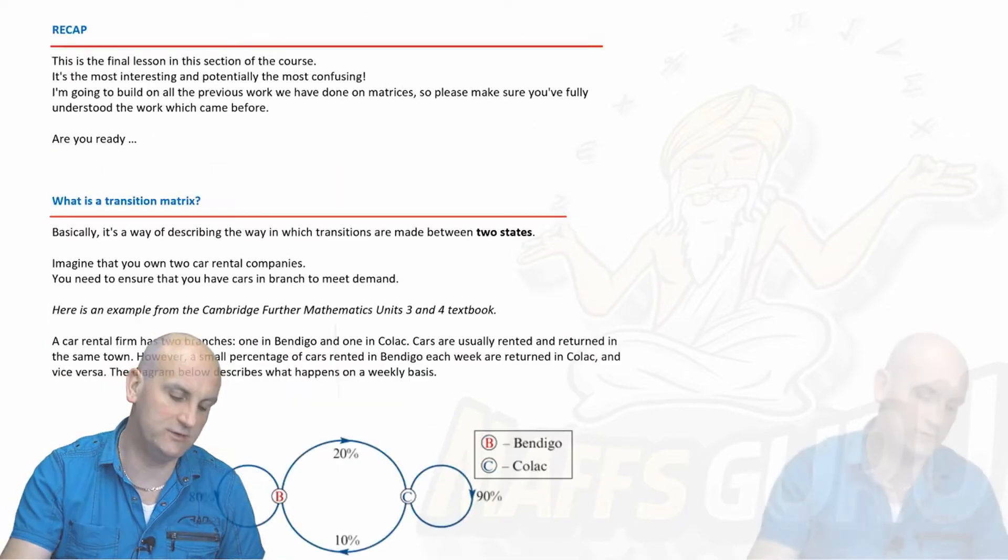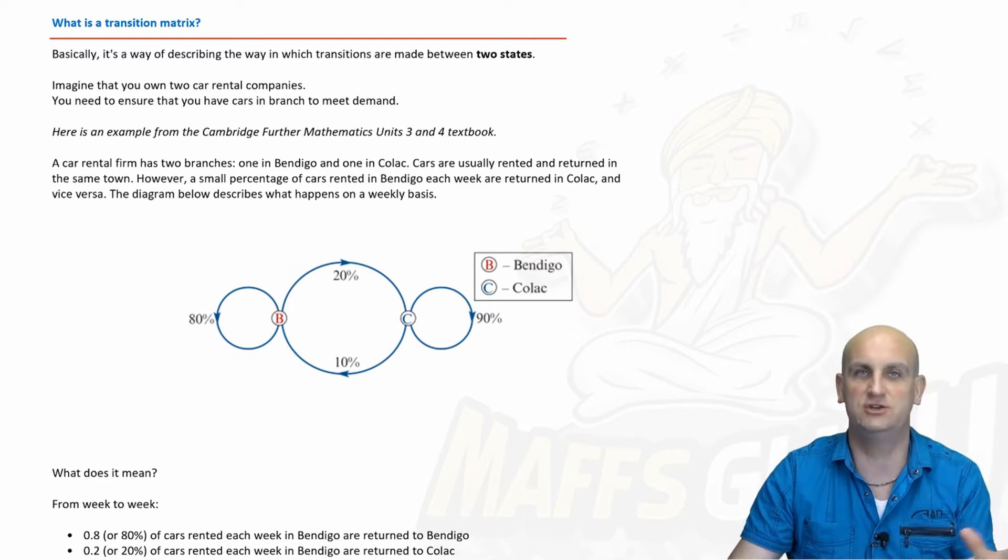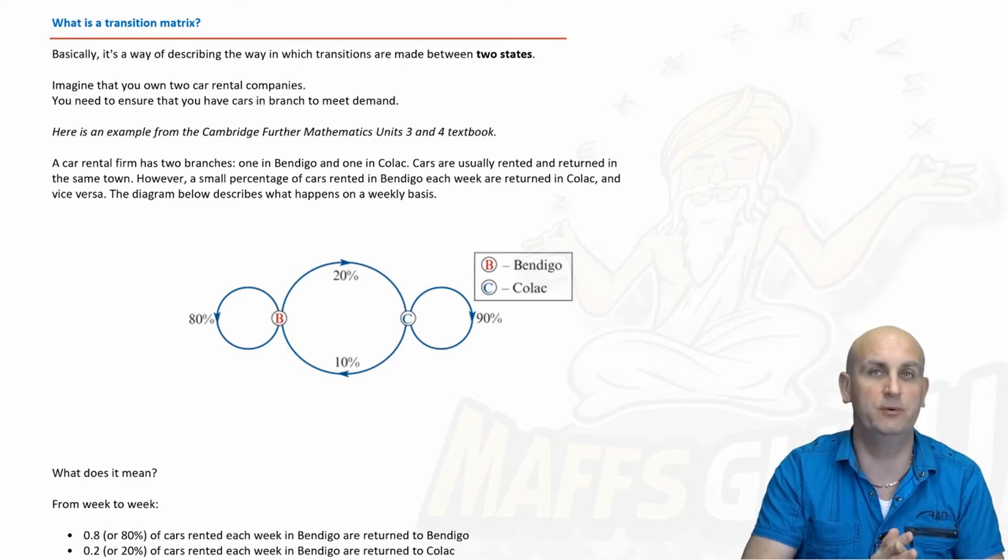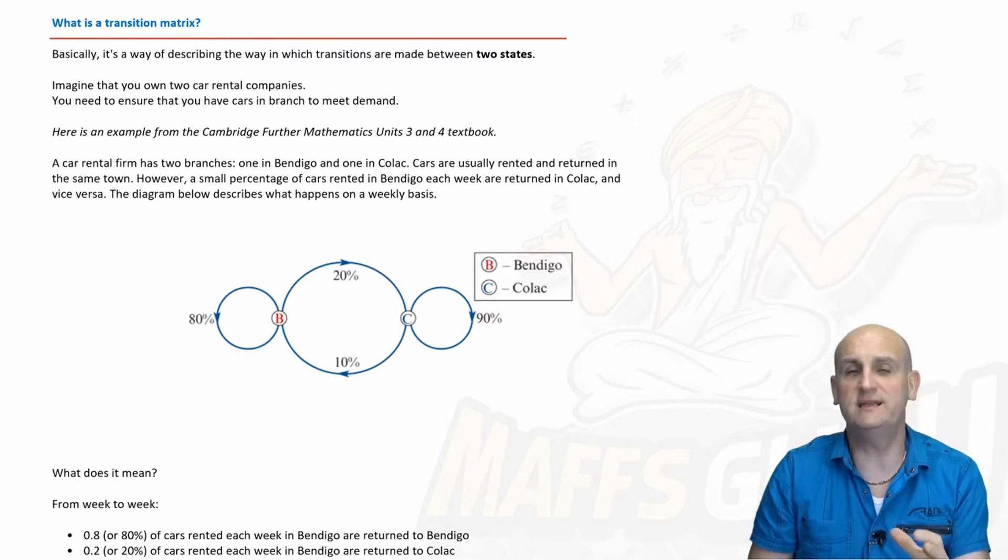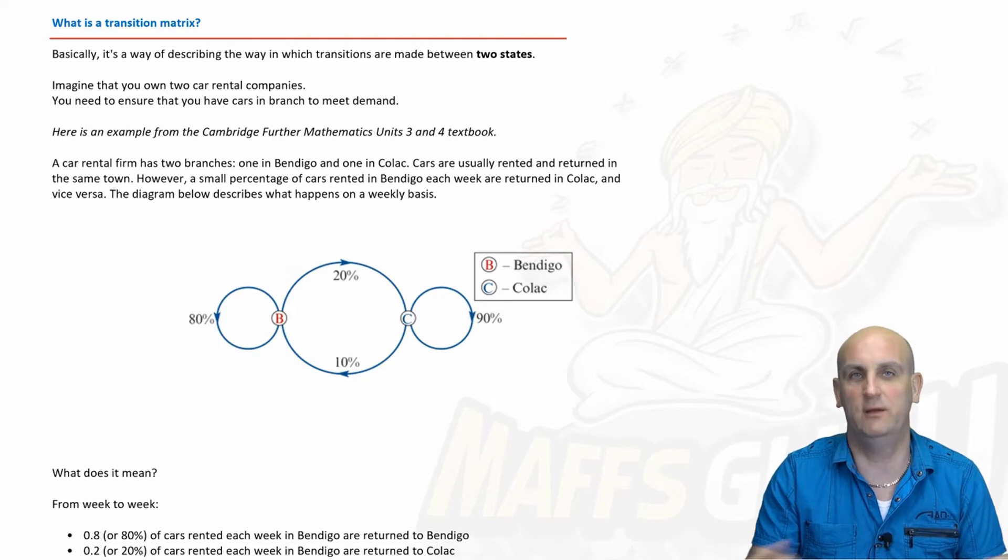Okay, so what is a transition matrix? Basically a transition matrix is a way of transitioning, that's changing between one of two states. That's really important, two states.